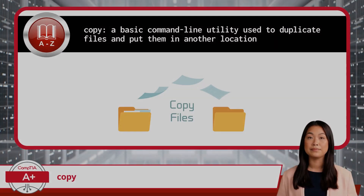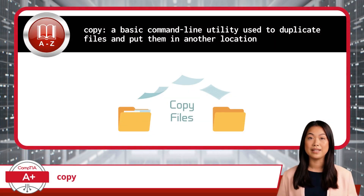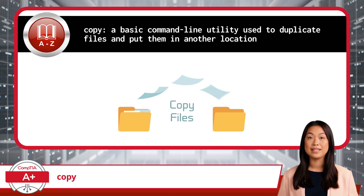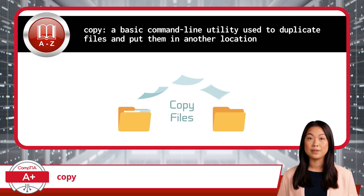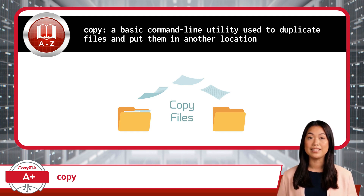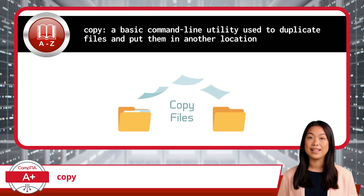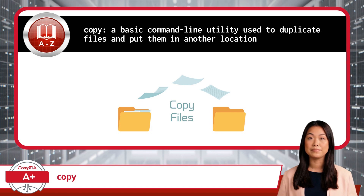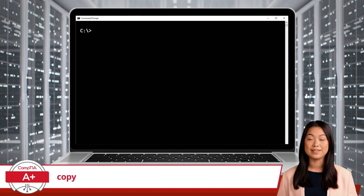Copy. The copy command is a basic command line utility that lets you duplicate files and put them in another location. Think of the copy command like making a photocopy of a paper document — you keep the original in one drawer and place the copy in another. This command is handy when you want to back up important files, move data to a different spot, or simply make an extra copy for safety.